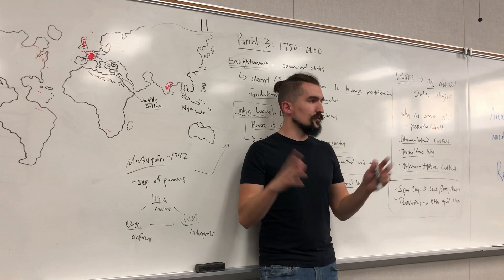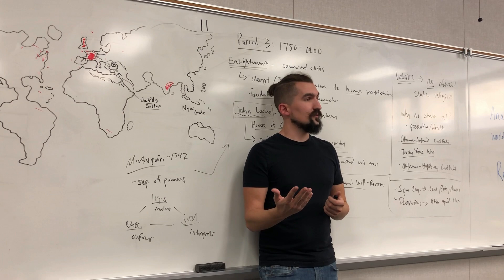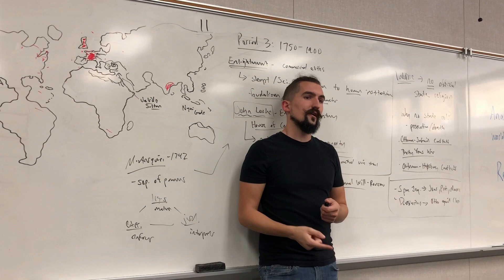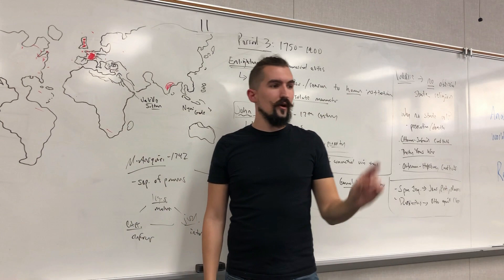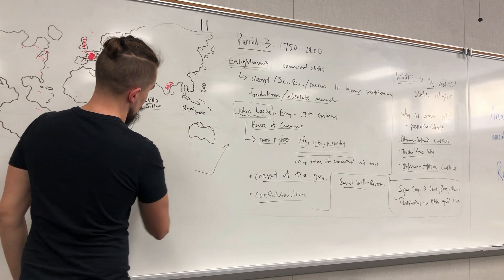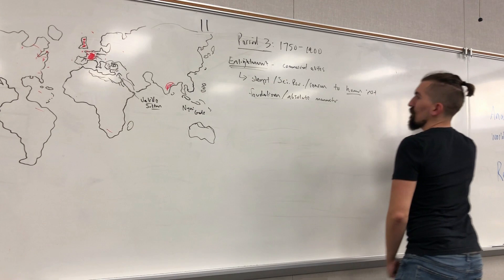The impact of the Enlightenment beyond ideas was revolution — the United States, France, Latin America, Haiti. Germany's unification and the Italian unification also had Enlightenment influences, though those are more nationalism-driven. In the Philippines and the Ottoman Empire, ottomanism movements also emerged. We'll go over how the Enlightenment and nationalism inspired these revolutions, though we don't have time for all of them in depth.